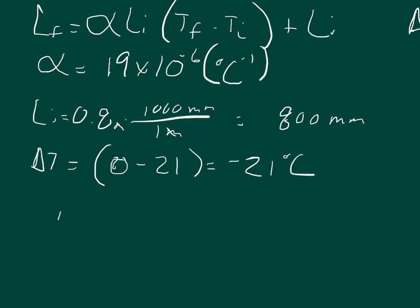You'll end up with 19 times 10 to the negative sixth per degree Celsius times 800 millimeters times negative 21. All of this is going to be plus the 800 millimeters for the original length. And what you'll notice is in this term right here we have a negative, and so we know that this whole term is going to be negative. And so when we add that to 800, we know that our answer is going to be less than 800.